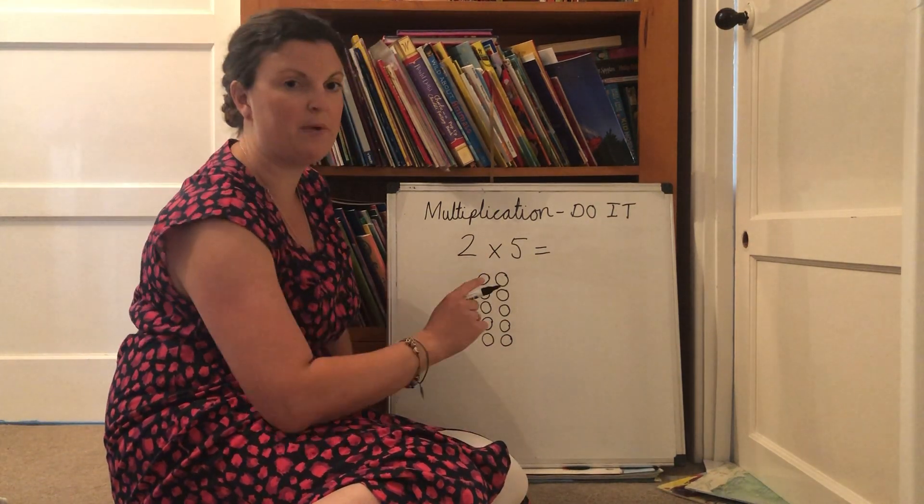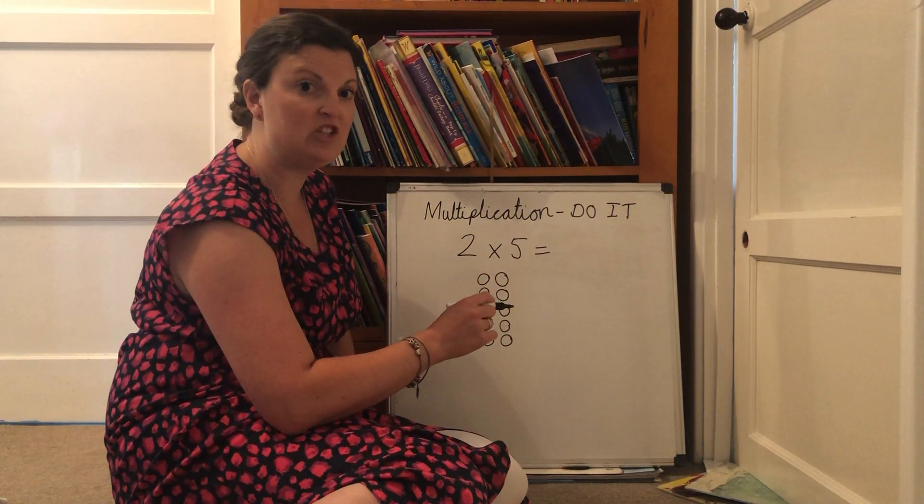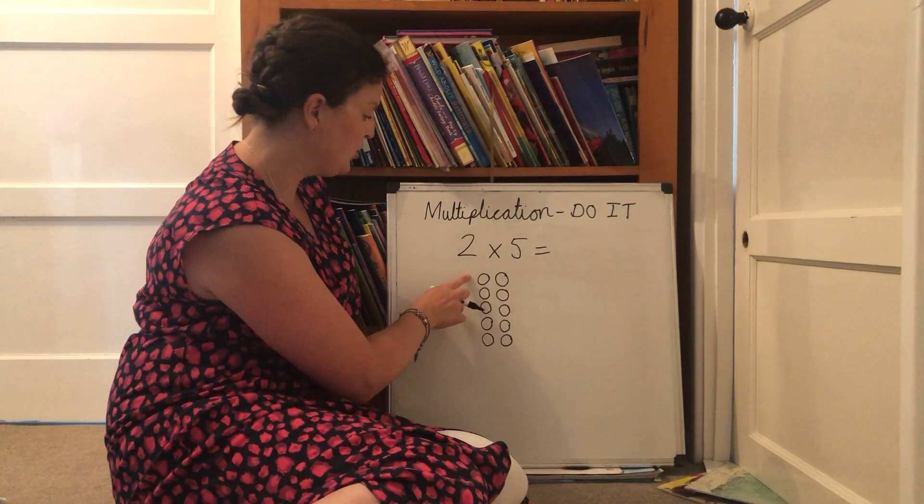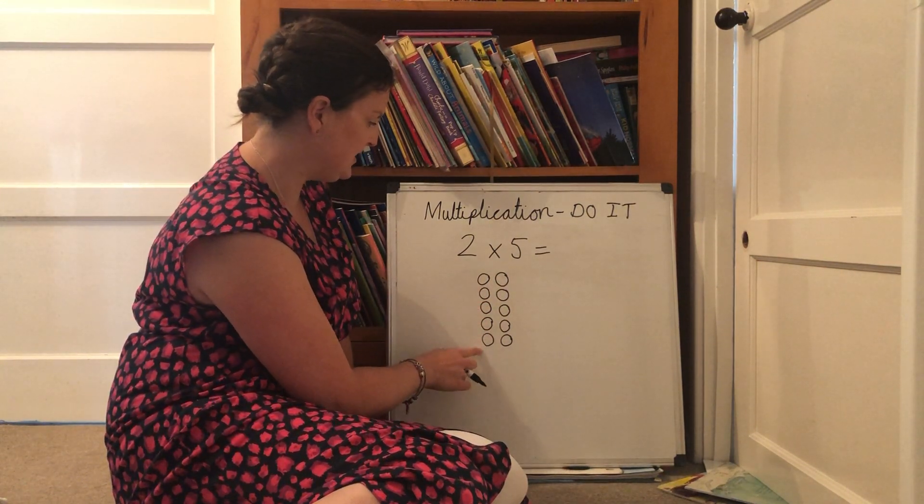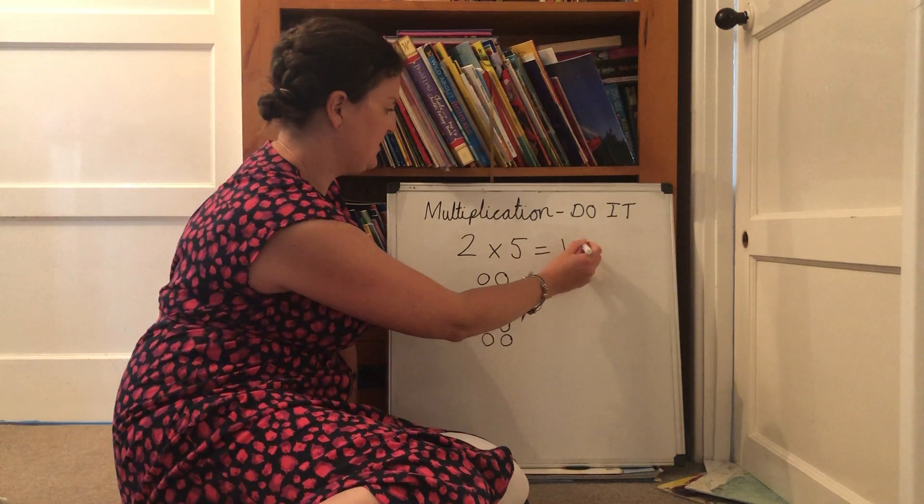and five groups of two. And I can count these one at a time but I can see that they're arranged in twos so I'm going to count them in twos. Two, four, six, eight, ten. And the answer is ten.